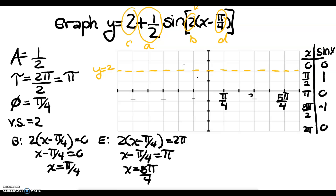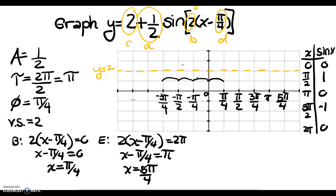That should be very easy to label. 2 pi over 4 reduces to pi over 2, and 4 pi over 4 reduces to pi. I'm also going to count backwards — 4 big jumps — so I go backwards 1, 2, 3, 4. That is the beginning of another period: 0, negative pi over 4, negative 2 pi over 4 which is pi over 2, and negative 3 pi over 4.